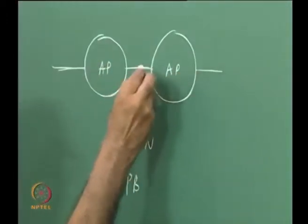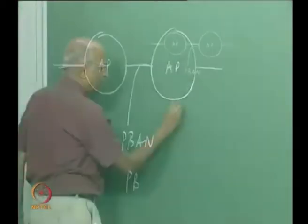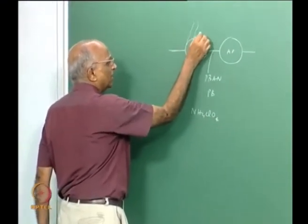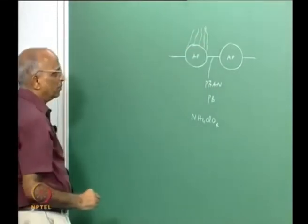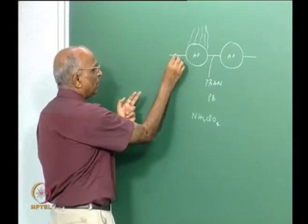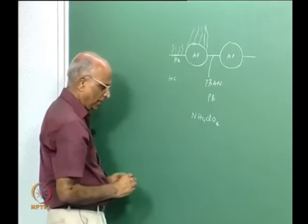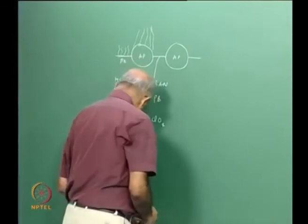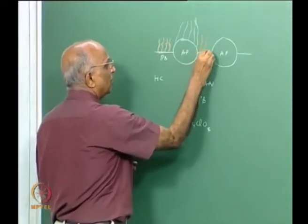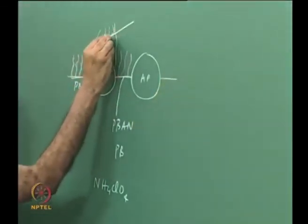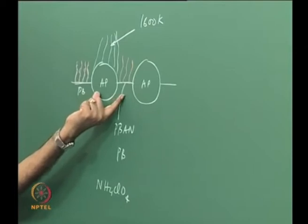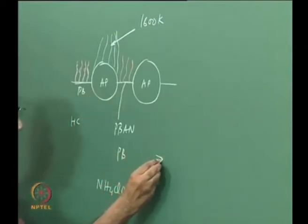When we supply heat and start burning, AP — which is NH₄ClO₄ — contains oxygen and hydrogen, so we could get a monopropellant flame; AP itself will burn. But the hydrocarbon polybutadiene cannot burn because it is just hydrogen and carbon with no oxygen. Therefore, the volatiles of hydrogen and carbon come out as fuel vapour. This monopropellant flame is typically at a temperature of around 1600 K, at pressures greater than around 10 atmospheres.